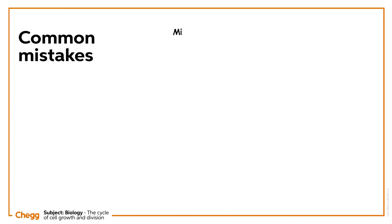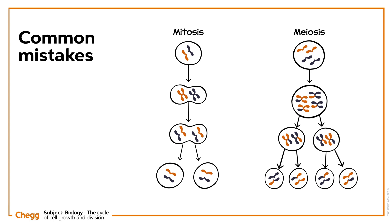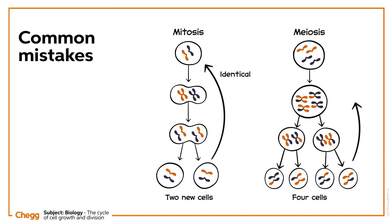Be careful not to confuse mitosis and meiosis. Though they have similar steps with the same names, mitosis is the process of making two new body cells identical to their parent cells, whereas meiosis creates four sex cells genetically distinct from their parents.